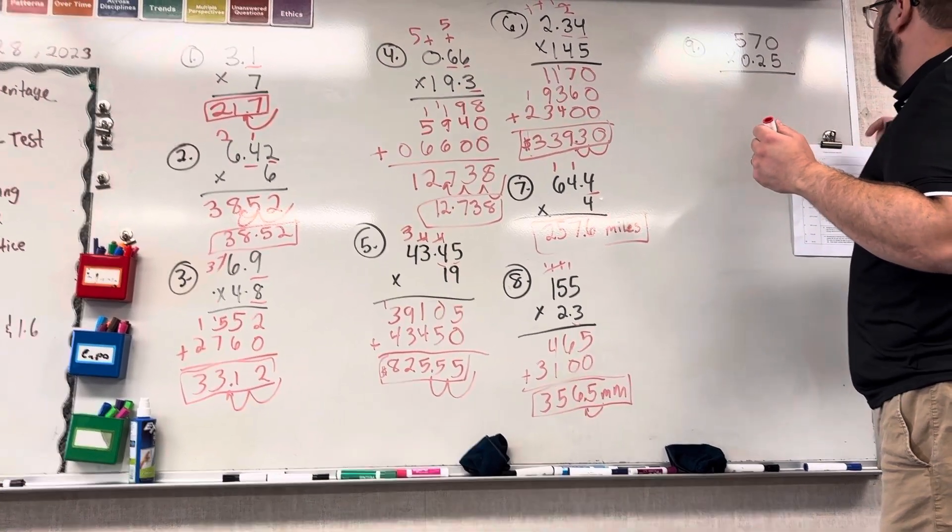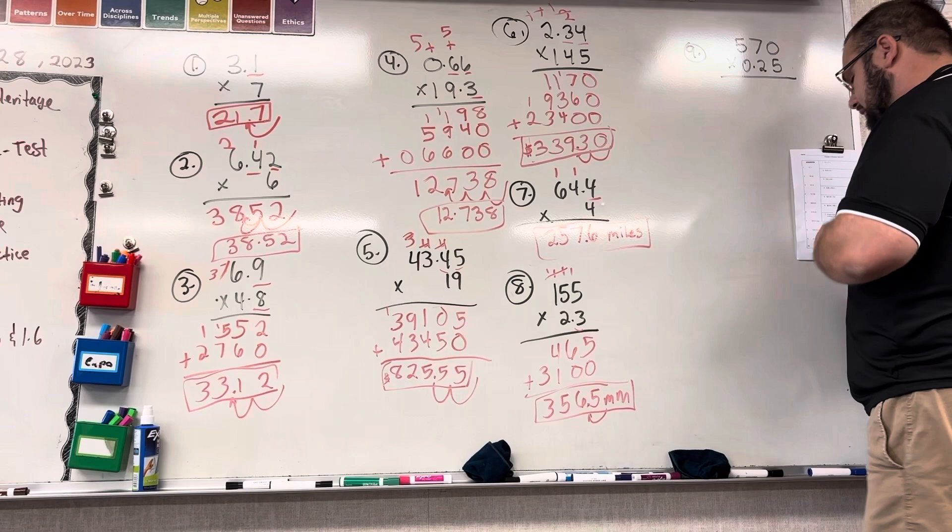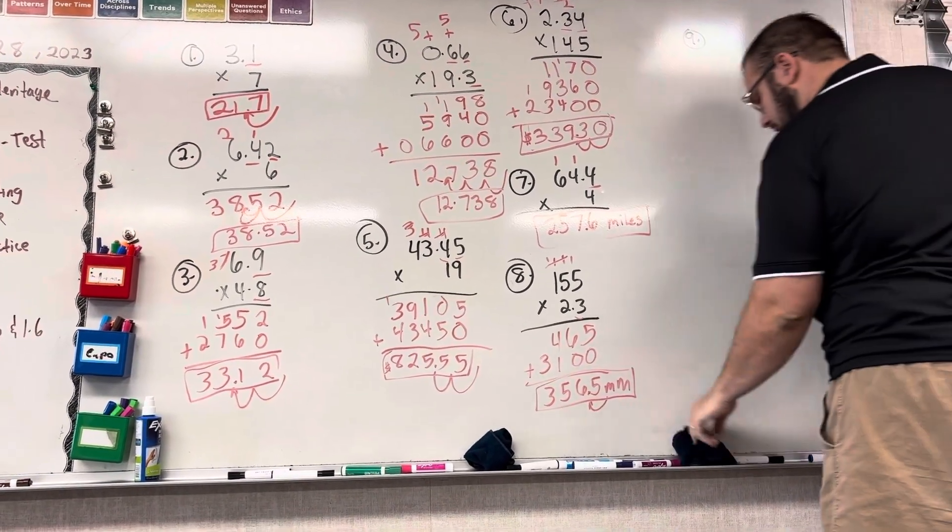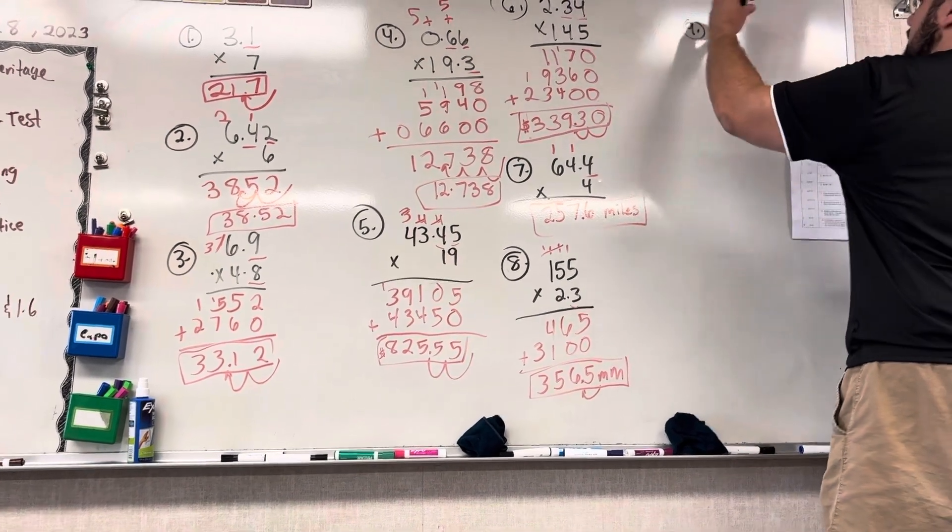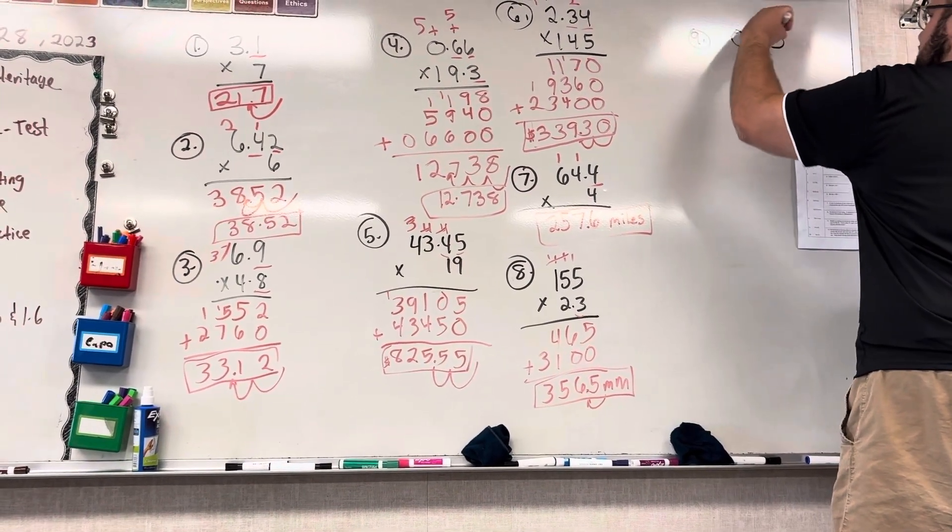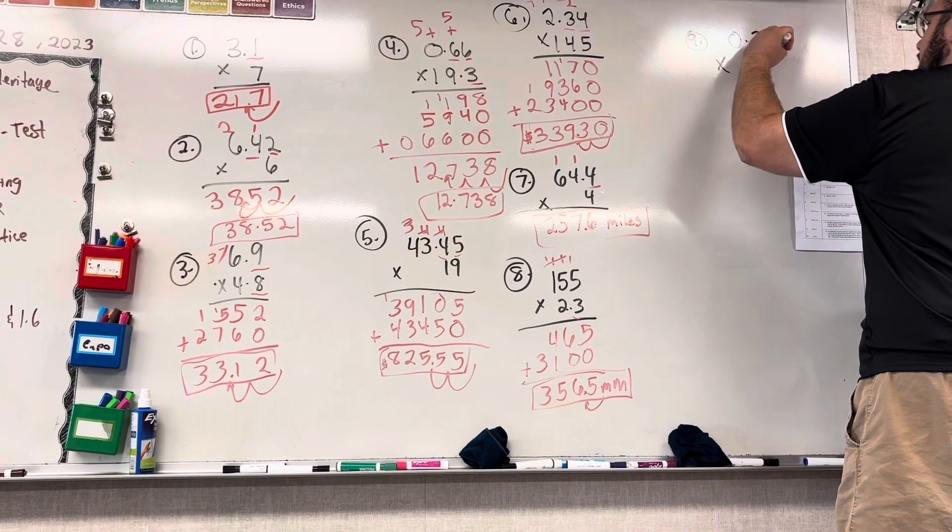For 0.25 cents, and she sells 57 cups. So I'm going to put 0.25 on top, because it has the most digits, times 57.